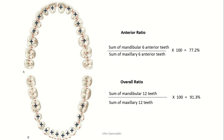The question is why the anterior ratio is much smaller compared to the overall ratio. The reason is that if you compare maxillary incisors with mandibular incisors, maxillary incisors are much wider. However, in the overall ratio, first molars are included, and the mandibular first molar is wider than the maxillary first molar. Therefore, the overall ratio is compensated to some extent, which explains this difference.